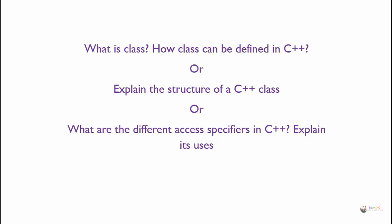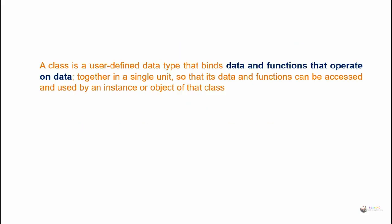What is a class? How can a class be defined in C++, or explain the structure of a C++ class? A class is a user-defined data type that binds data and functions that operate on data together in a single unit, so that its data and functions can be accessed and used by an instance or object of that class.